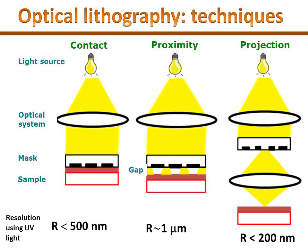To avoid this contamination effect, we can force a gap between the glass mask and the sample, but in this case diffraction effects also remain, enlarging the minimum feature size that we can achieve. This approximation is called proximity lithography, and the resolution is a little worse than in contact lithography — around 1 micron.